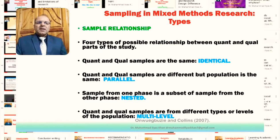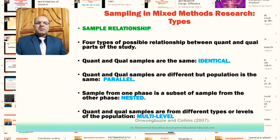The parallel type is where the quantitative and qualitative samples are different but the population is the same — both samples are drawn from the same population. Then the nested one, where the sample from one phase is a subset of the sample from the other phase. Generally, because quantitative samples are larger, the qualitative part is a subset of the quantitative sample. The multilevel one is where the quantitative and qualitative samples are from different types or levels of the population.